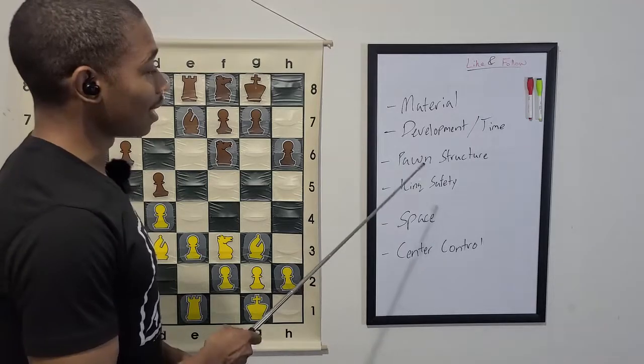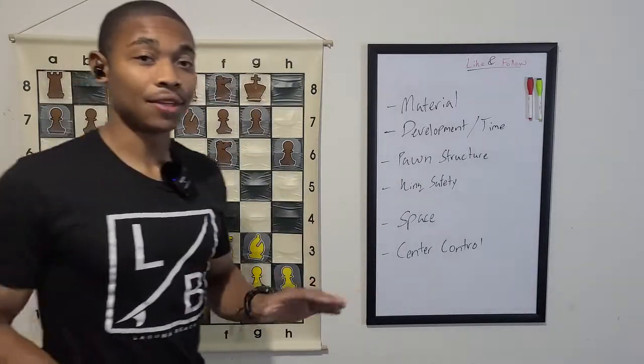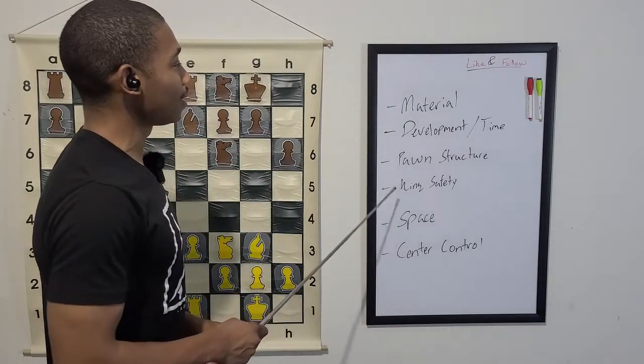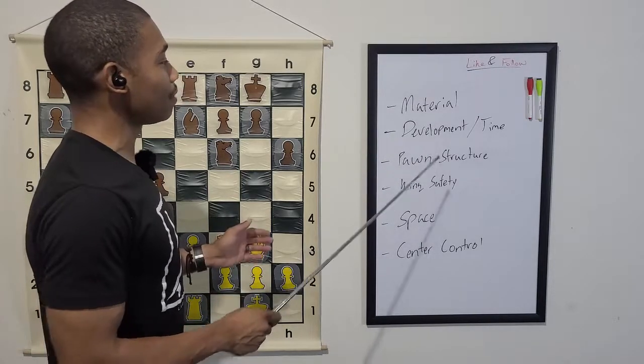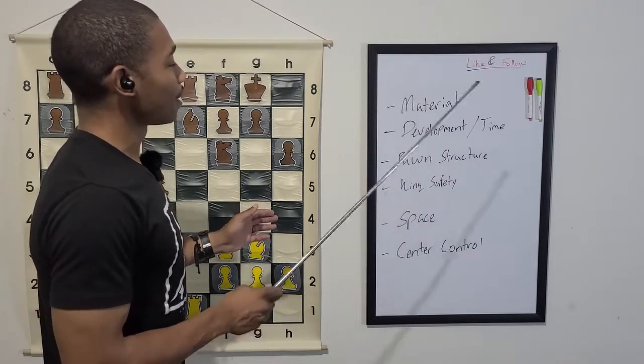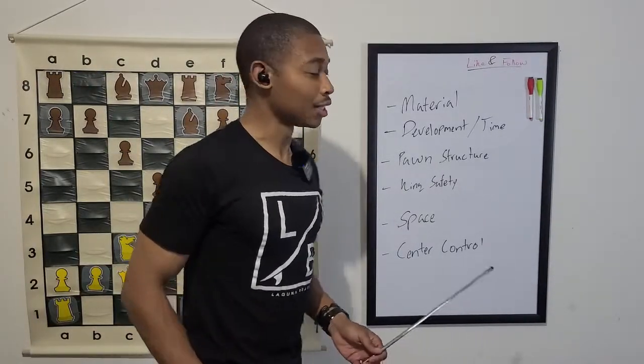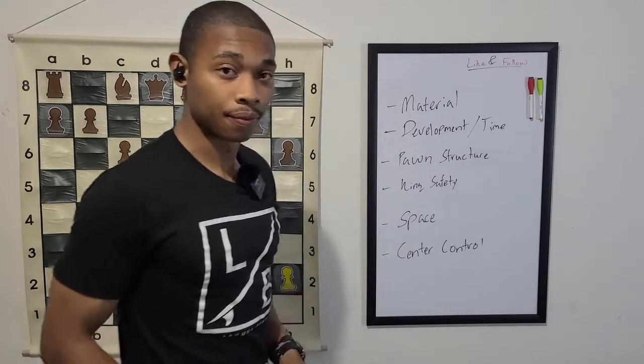Fourth, we got king safety. King safety is really important. If the king isn't safe, then you really don't have a game. King safety kind of trumps everything. Even if you're behind a material, even if you're ahead of material, if you have bad king safety, you're most likely going to lose the game. You don't want your king to be naked. All right? Don't have a naked king.